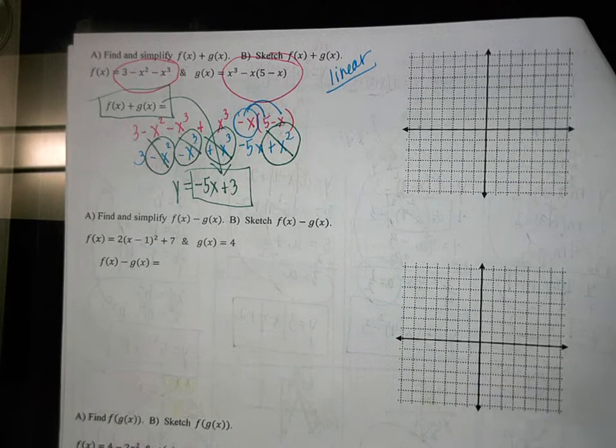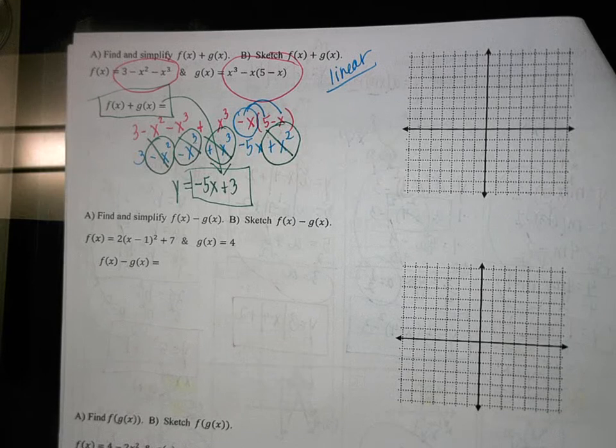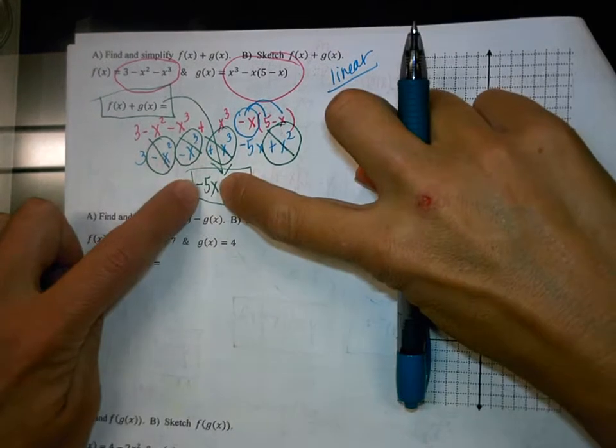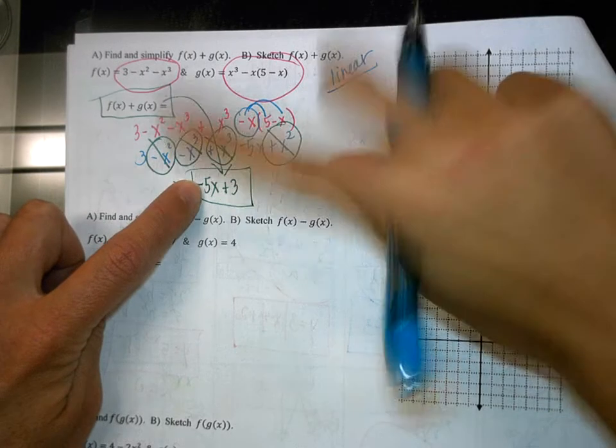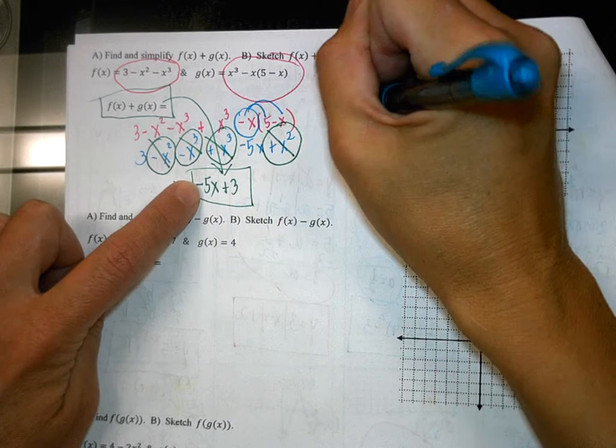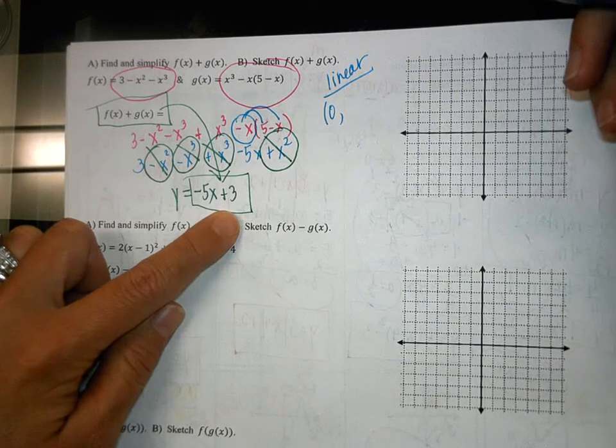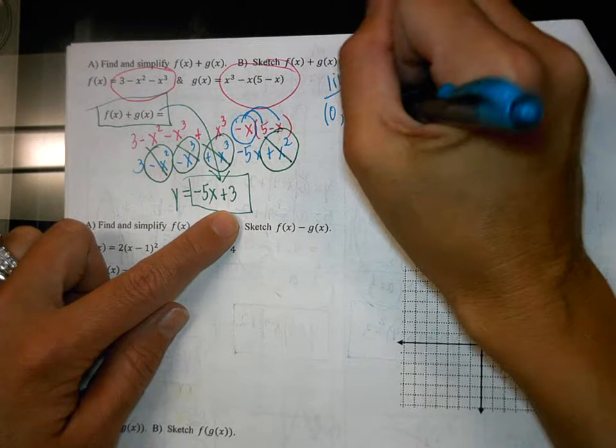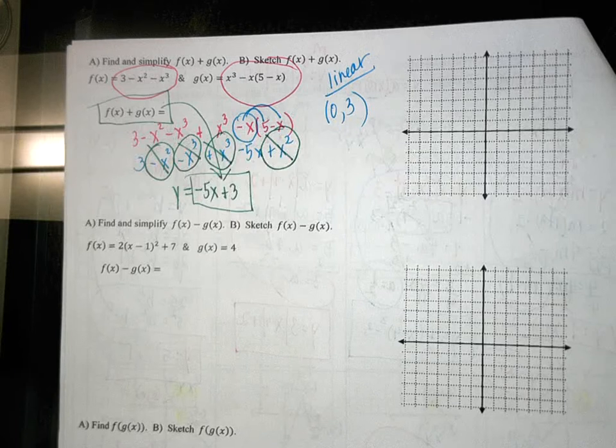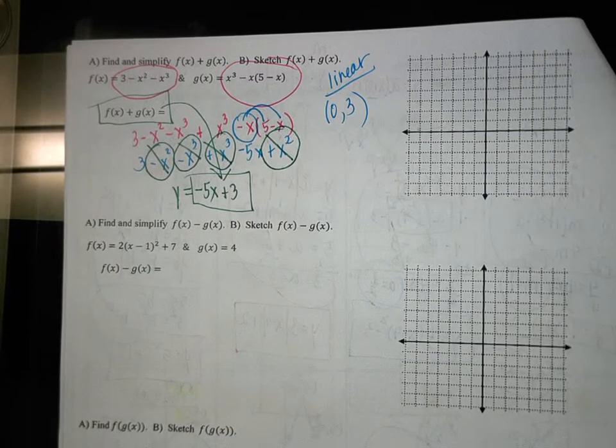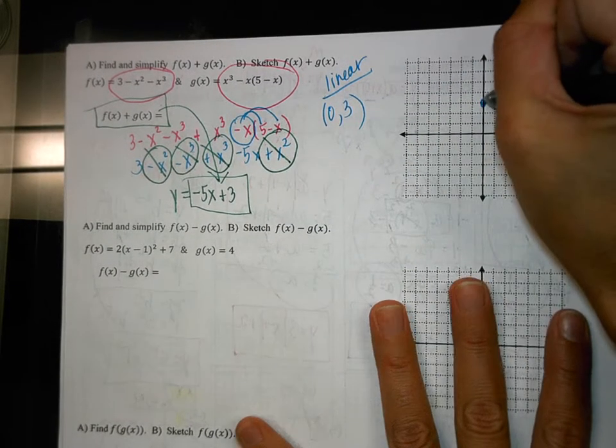All right, so what would be my starting point for this linear function? So is there anything in parentheses with the x? So that means the x value for my starting point would be 0, and then my y starting point would be 3. Everybody okay there? So 0 up 3 and we make a point.